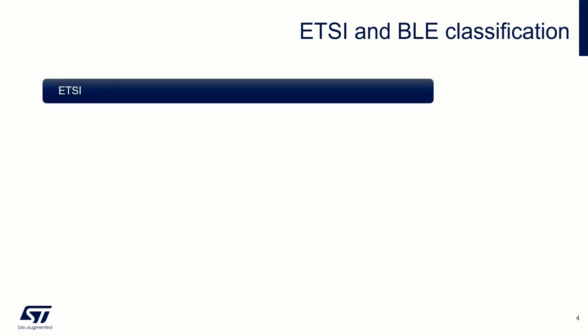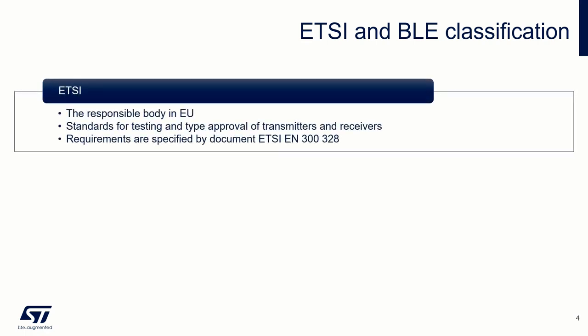The use of the radio device is regulated by RED directives in the EU. The European standardization body is ETSI. It deals with standards for testing and type approval of transmitters and receivers. The BLE device must be compliant with European standard ETSI EN 300328 to be sold in European markets.